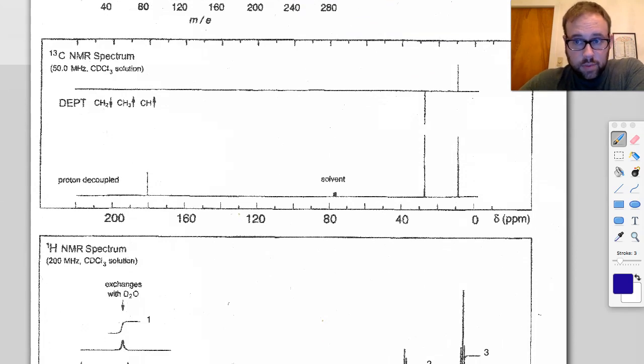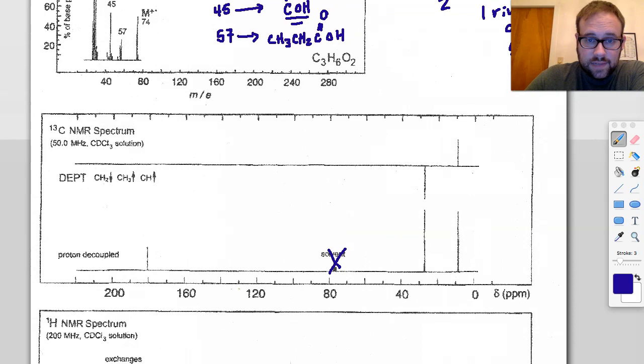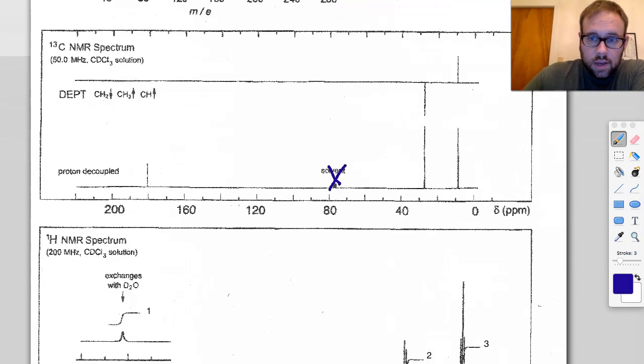We have the C-13 here, the DEPT and the proton decoupled or regular carbon-13 NMR. If we take a look at the regular, we ignore the solvent and see one, two, three peaks. The third one is way downfield here, around 180 or thereabouts. There's three peaks in the carbon-13 NMR, that means all three carbons are unique. That makes sense - if we take a look at the ethanoic acid we're proposing, every single carbon is unique, there's no symmetry in that molecule. The peak at around 8 ppm is almost certainly going to be a methyl. Anytime you see something less than about 20 ppm on a carbon-13, you're dealing with methyl groups, CH3 groups.